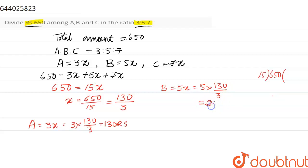And now C will receive an amount of 7 into x, that is equal to 7 into 130 by 3. This value is nothing but 303.33.